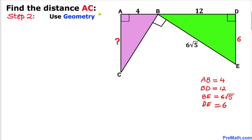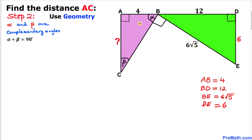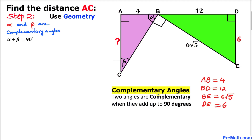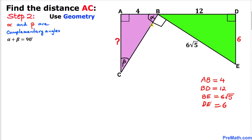Now using geometry, let's focus on the purple triangle. We call one angle alpha and another angle beta — these are complementary angles. By definition, two angles are complementary if they add up to 90°. Since the sum of all angles in a triangle is 180°, alpha + beta = 90°.